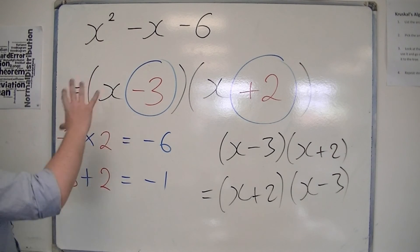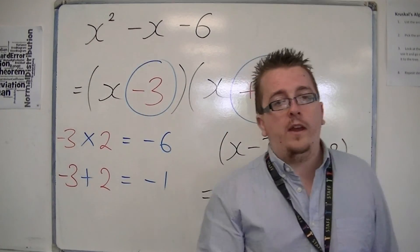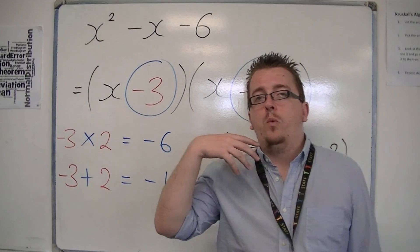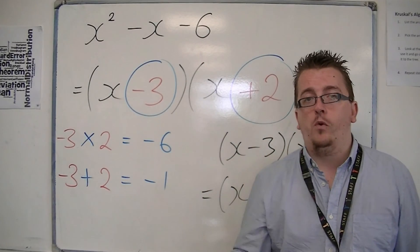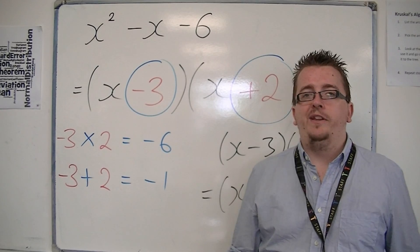So in this, that's how you need to be able to factorise when the coefficient of x squared is just 1. And in the next video, we're going to be looking at an example where the coefficient isn't 1, and that's where it becomes a little bit more fiddly.